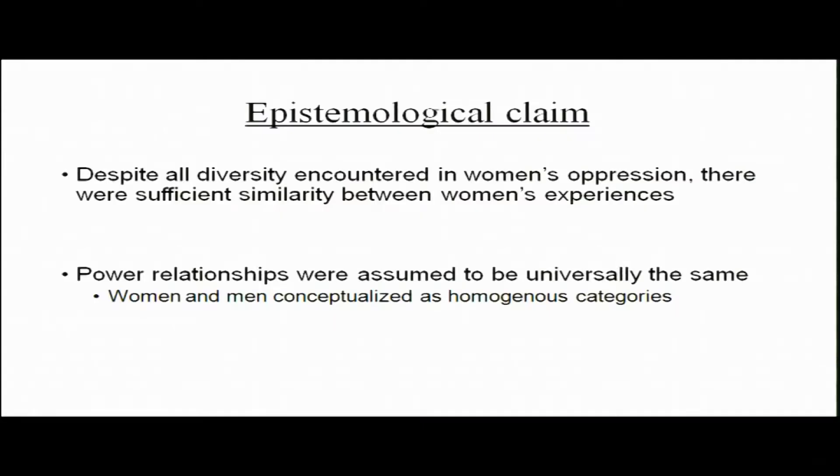There has also been an epistemological claim that despite all diversity in women's oppression, there were sufficient similarities between women's experiences. Once it was established that women's oppression is a universal issue, and despite the diversity of manifestations there was tremendous similarity in the nature of women's experiences across societies, power relationships were assumed to be universally the same. With that assumption comes the danger of treating women and men as homogeneous categories.